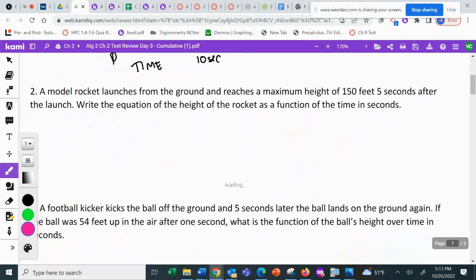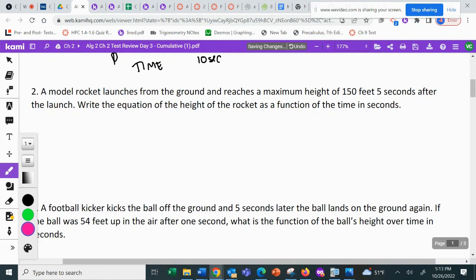The second picture, a model rocket launches from the ground and reaches a maximum height of 150 feet, five seconds after the launch. And then you are going to go and write the equation of the height of the rocket as a function of the time in seconds. So that's what I talked about in class. Last time, a function of is like saying F of. That means our time in seconds is the X. So the height of the rocket is the Y.